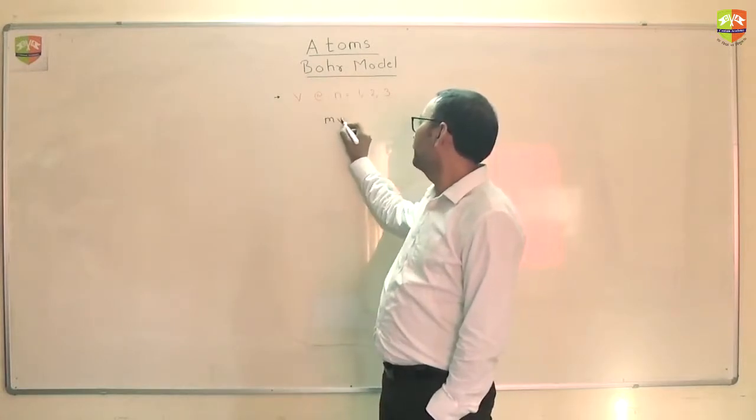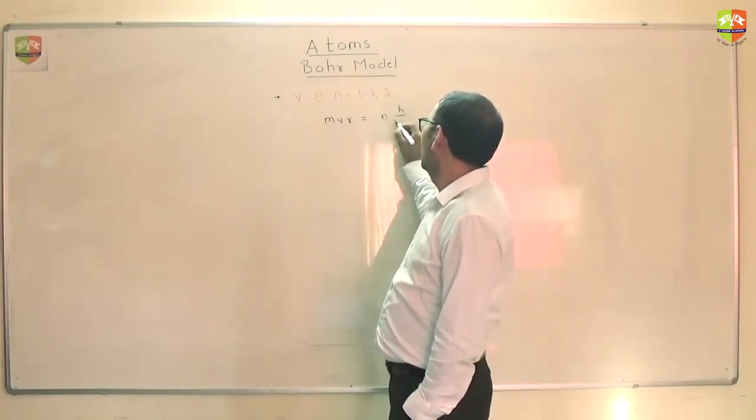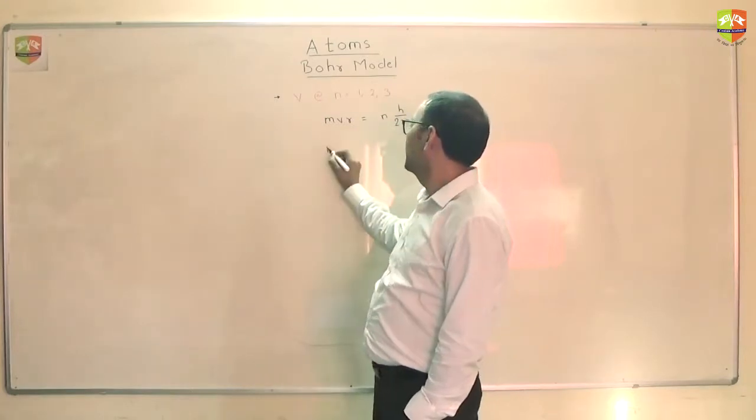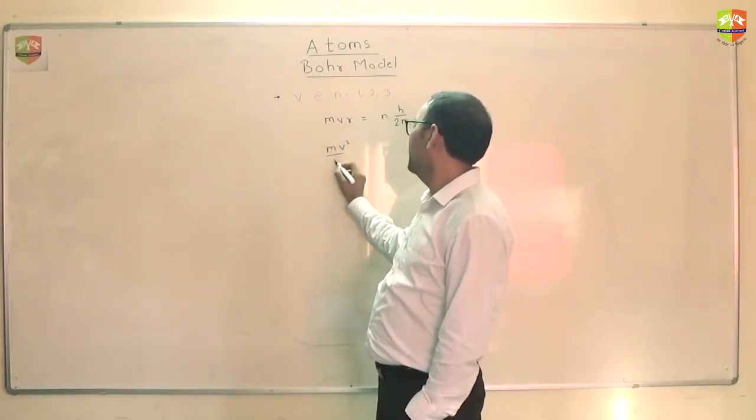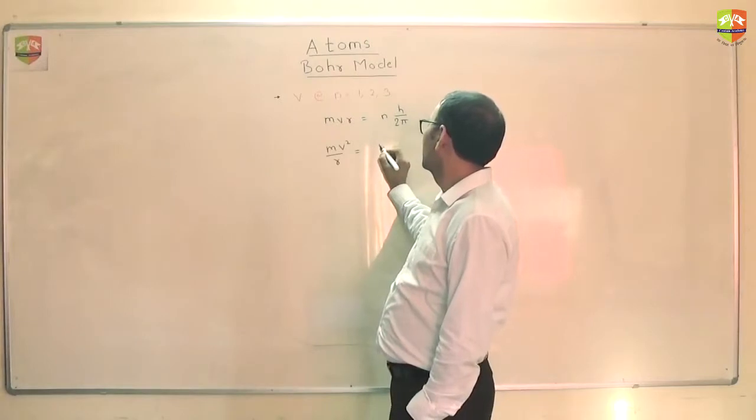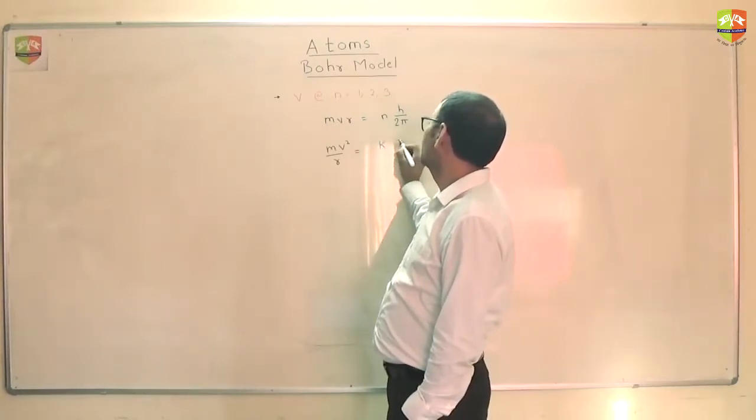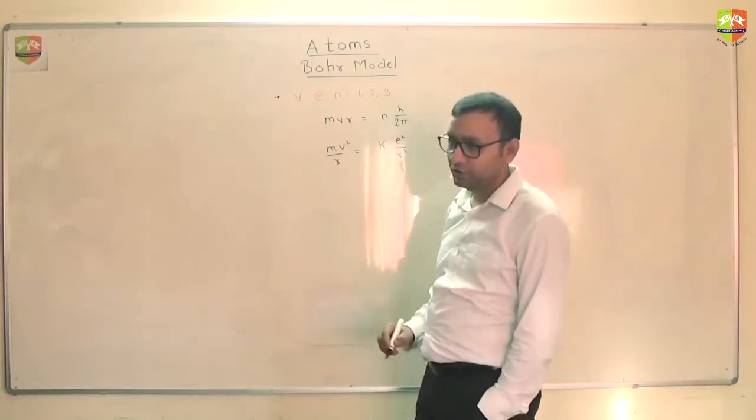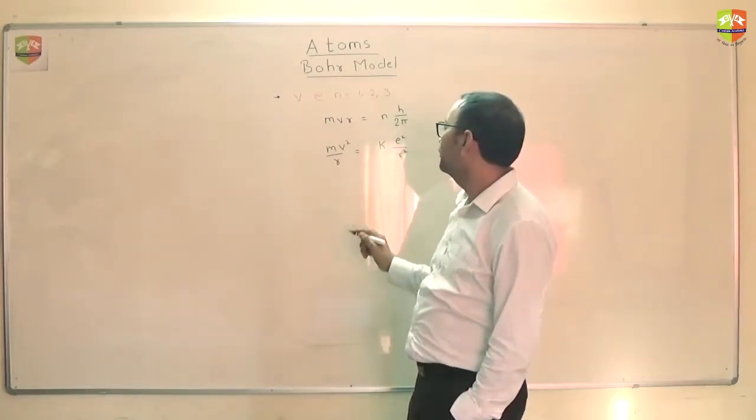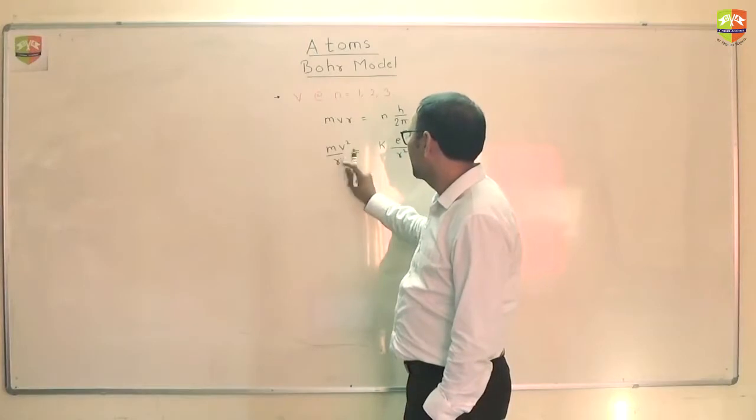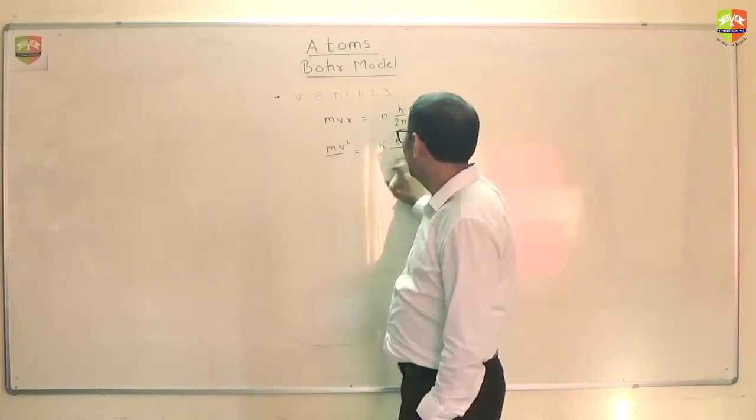You have mvr and what else? mv² by r with what? k times e² by r². You want velocity? You want to get rid of r. Cut one r from here and place it here.